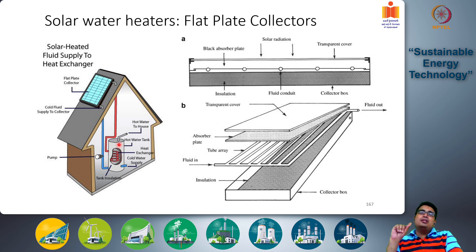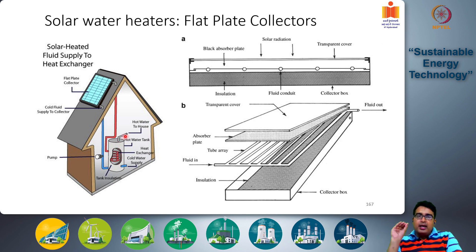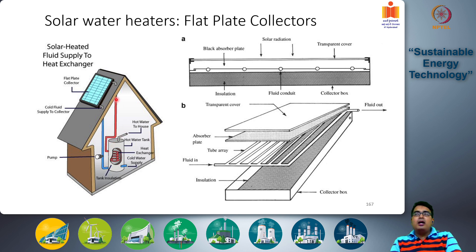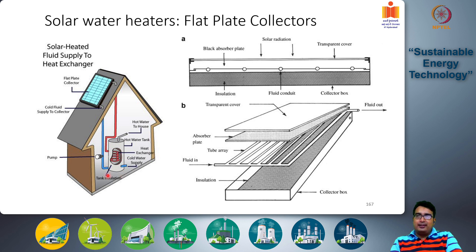Direct water flow through the collector is not recommended in places with cold winters, because water could freeze and create ice within the tubes, stopping the flow. In cold climates, an antifreeze fluid that does not freeze in sub-zero conditions is used instead. This antifreeze fluid flows through the tubes and releases heat to the hot water in the tank via heat exchange, with no direct contact between the two fluids.